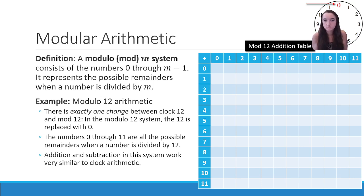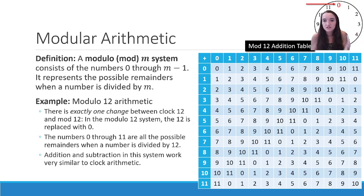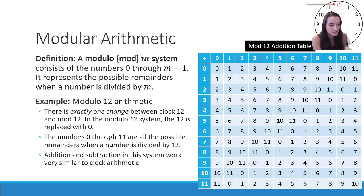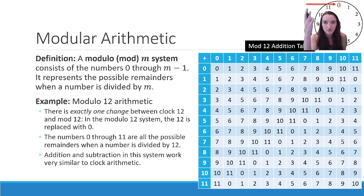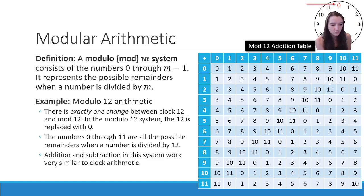Addition and subtraction work basically the same as on the clock — we just go around. In the mod 12 addition table, the only difference is we now have 0 instead of 12. Everything is the same until a sum would have been 12; instead we write 0, because we've cycled back. For example, 10 plus 2 would have been 12, but instead we put 0. The pattern still cycles: 1, 2, 3, 4, 5, 6, 7, 8, 9, 10, 11, 0, then repeats.